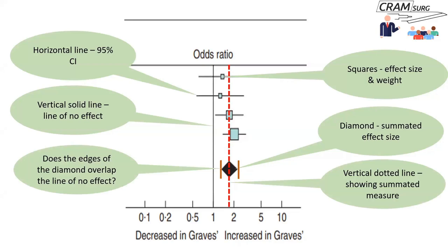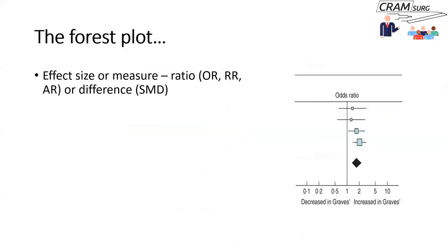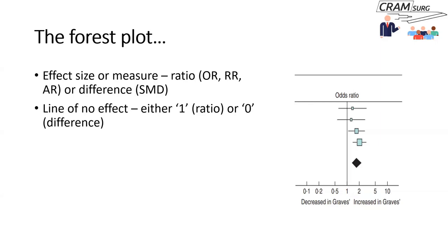You could also plot a dotted line — shown here in red — which usually runs through the summated effect size, indicating that summary measure. The edges of the diamond tell you whether the summated result is statistically significant: if the diamond does not overlap the line of no effect, then you've got a significant result for the summated effect size.